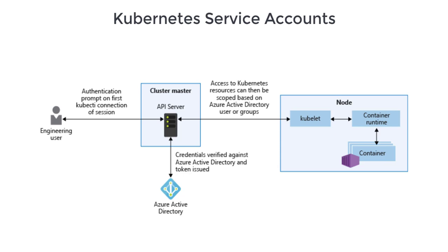Most API requests provide an authentication token for the service account or a normal user account. There are two methods to authenticate yourself against Kubernetes: one is using the service account, and the other is using a regular normal account. A normal account is the traditional way of accessing your applications or services — this could be a developer accessing the application or a human administrator accessing the services and processes.